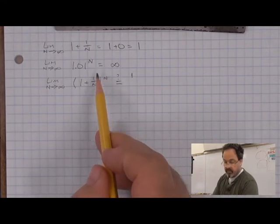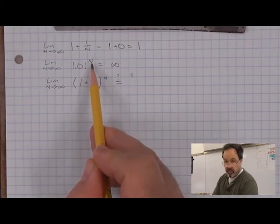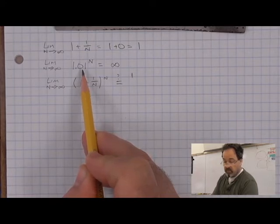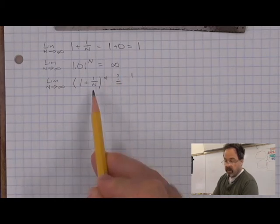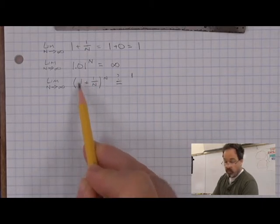But by the same token, anything that is raised to the nth power when n is going to infinity, even if the base is very small, as long as it's a little bit greater than 1, the limit will be infinity. And as n gets arbitrarily large, what's in parentheses here does remain greater than 1.